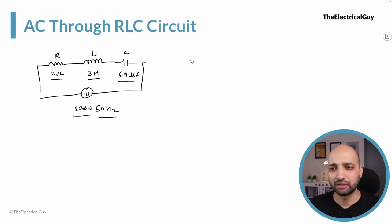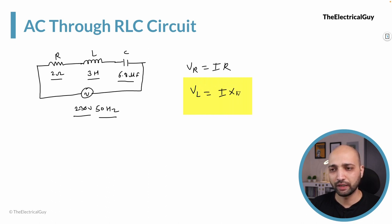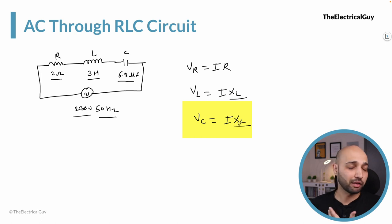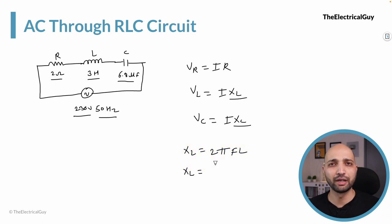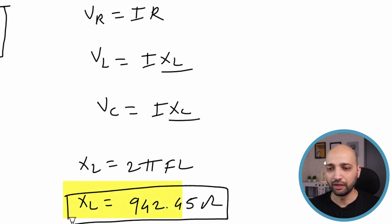Across the resistance there is a voltage drop VR, given by I × R. Across the inductor there is a voltage drop VL, given by I × XL, where XL is inductive reactance. The voltage drop across the capacitor is VC, given by I × XC. The formula for inductive reactance is XL = 2πfL, and putting in the values gives XL = 942.45 ohms.